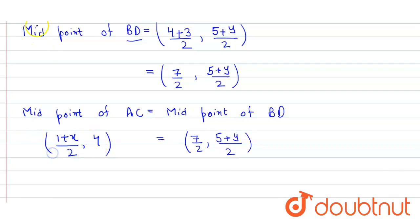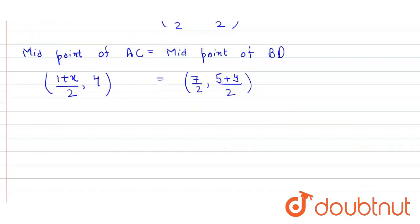Thus we get (1+x)/2 equals 7/2 and 4 equals (5+y)/2. The 2 will cancel out and when 1 is subtracted from 7 we get x equals 6.